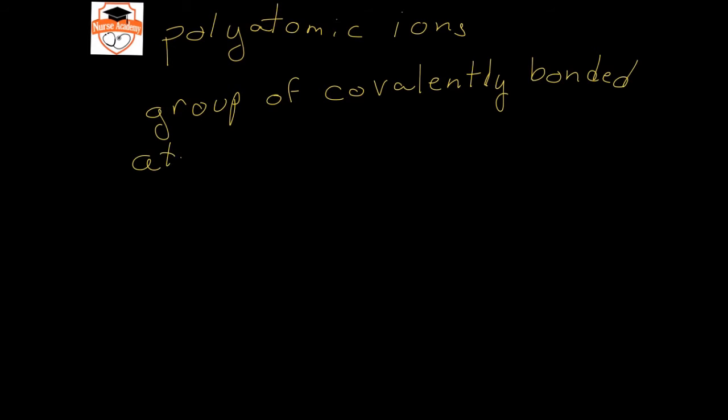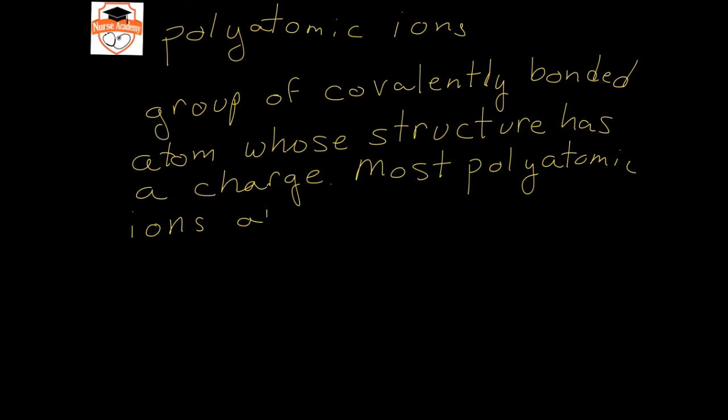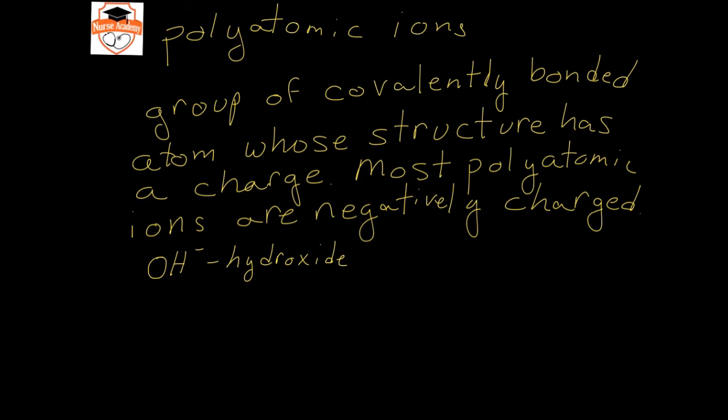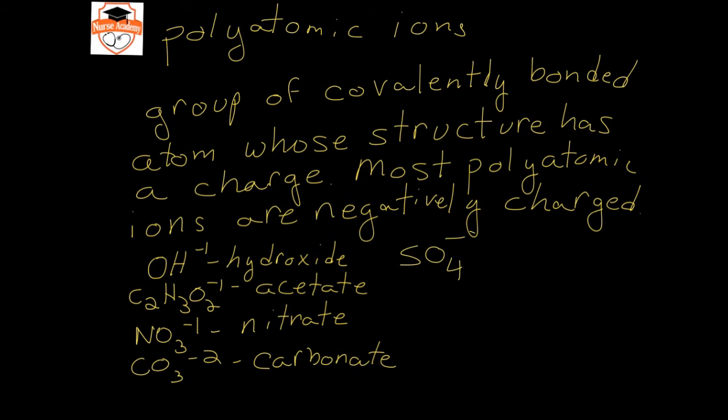Some compounds that are ionic will actually have what we call polyatomic ions in them. Polyatomic ions are a group of covalently bonded atoms whose structure has a charge. Most polyatomic ions are negatively charged. Some common polyatomic ions are hydroxide, acetate, nitrate, carbonate, sulfate, and phosphate.